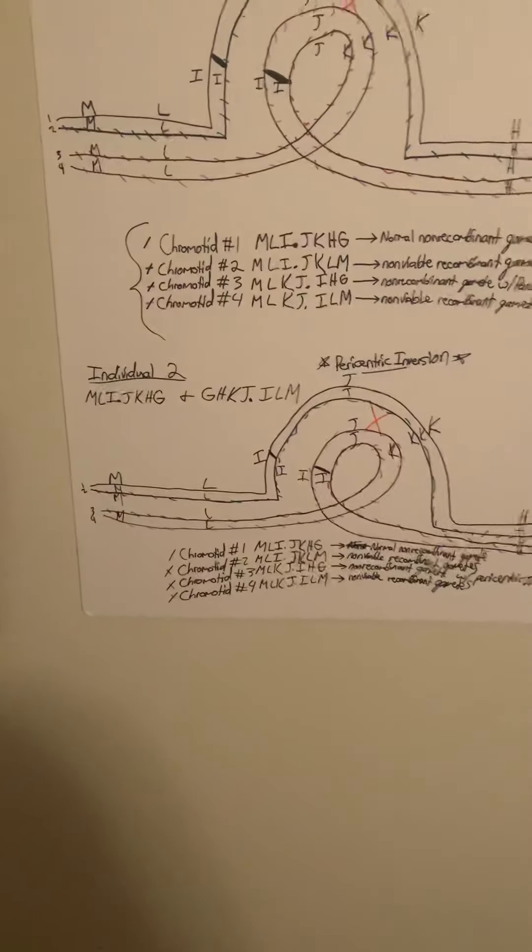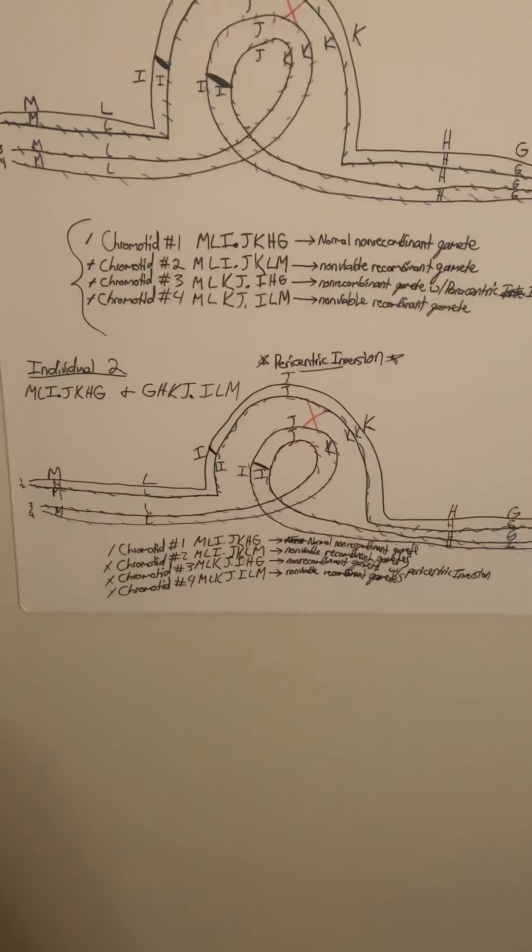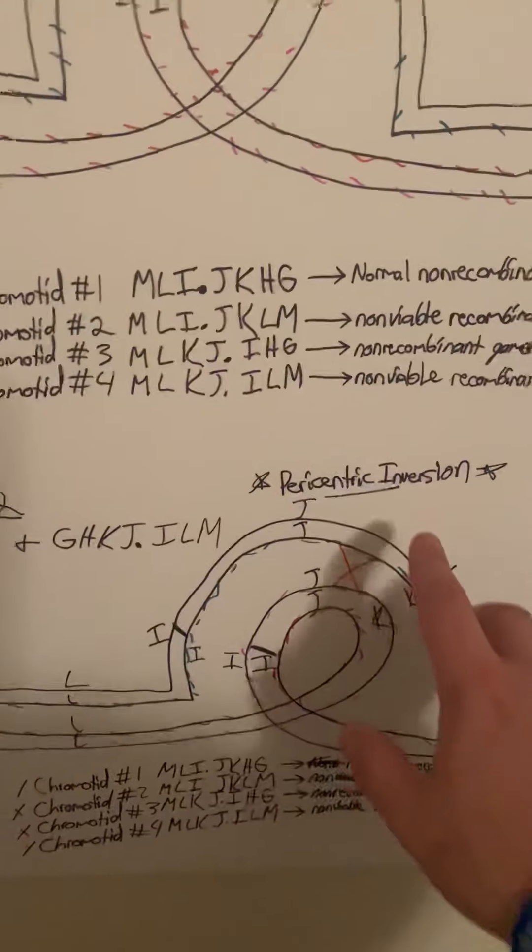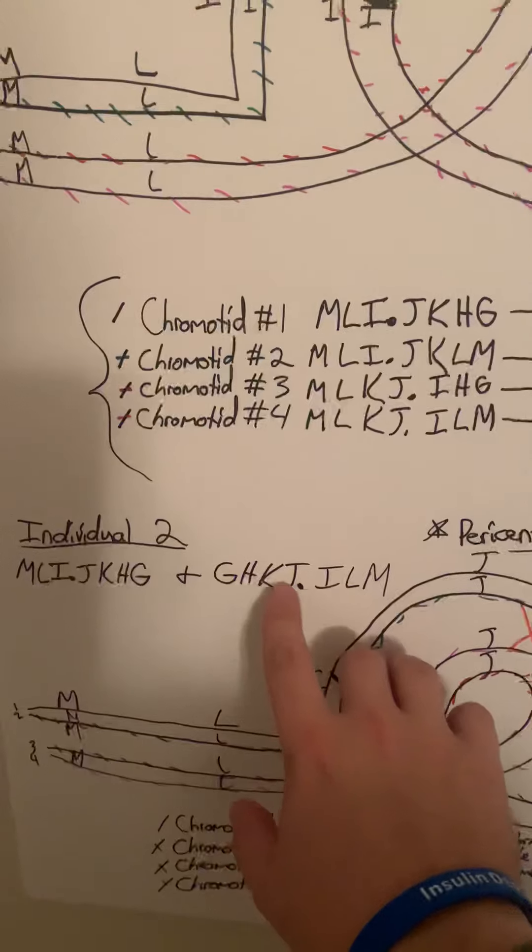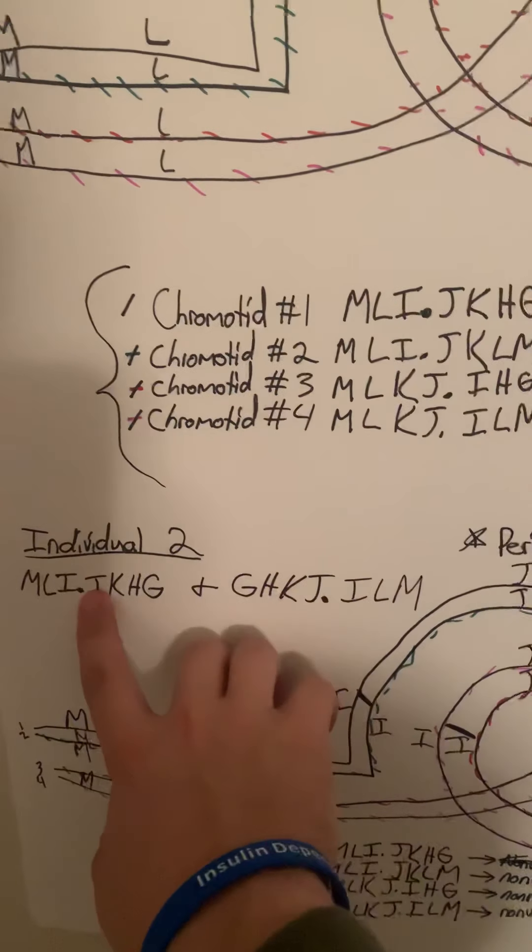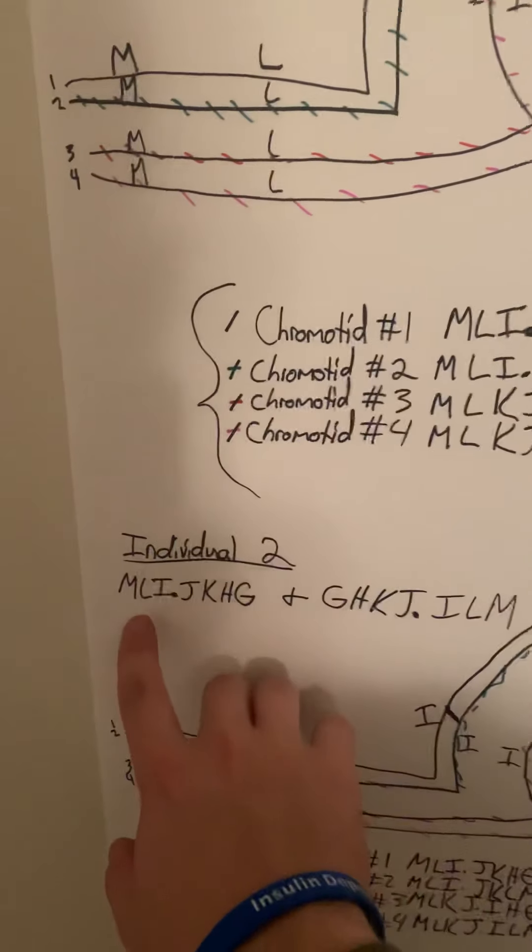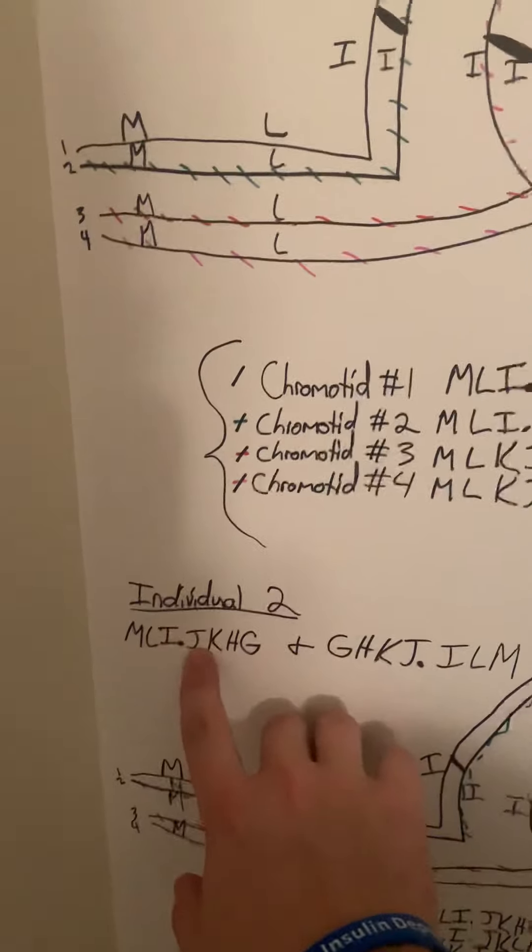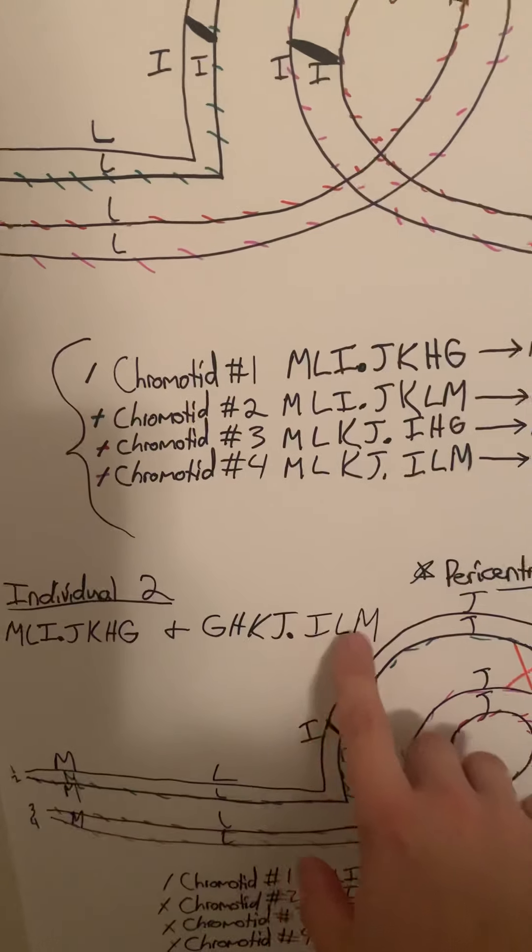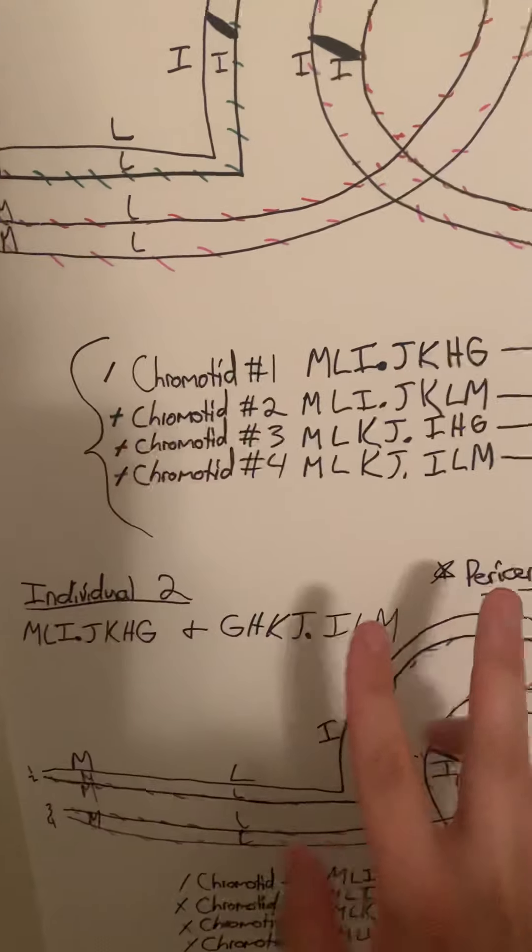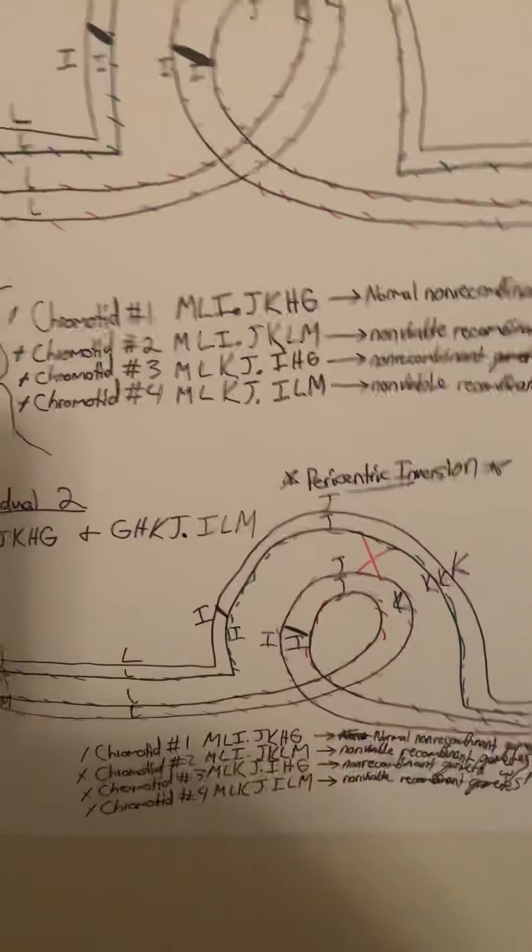If you look at individual 2, this is a paracentric inversion because the centromere is involved with these two chromosomes which are not in the same position. As you can tell, this is the same as the first individual. However, if you look at this, it's the exact same. It's just completely inverted. The entire chromosome is inverted.